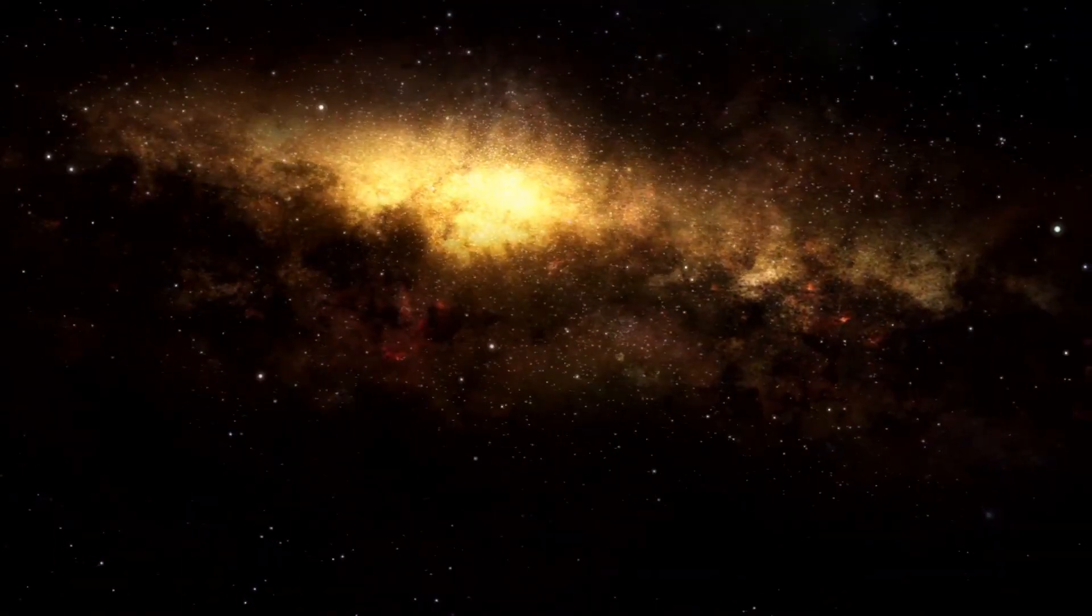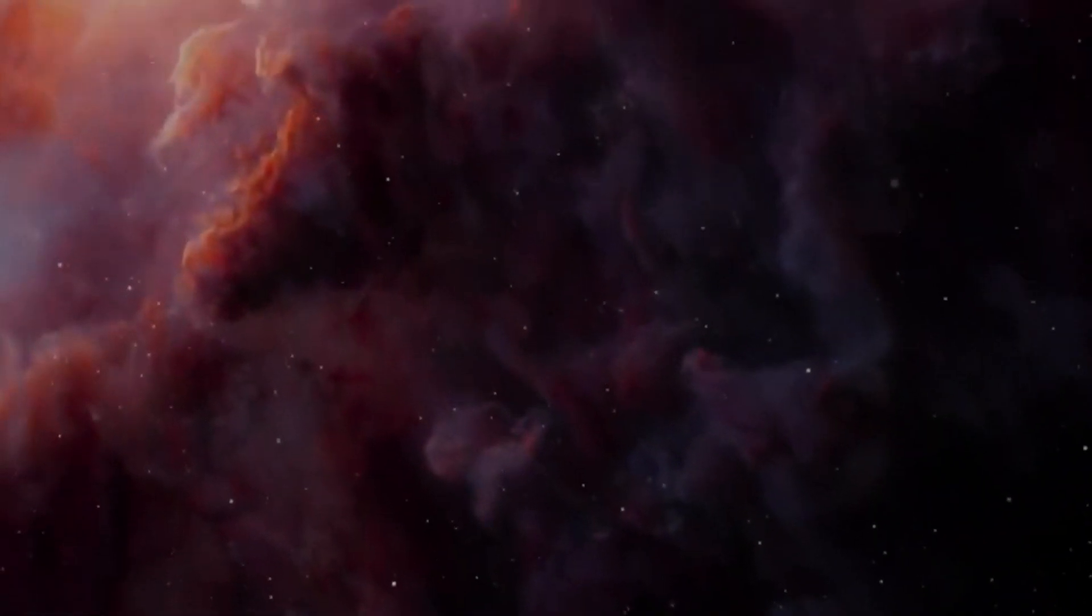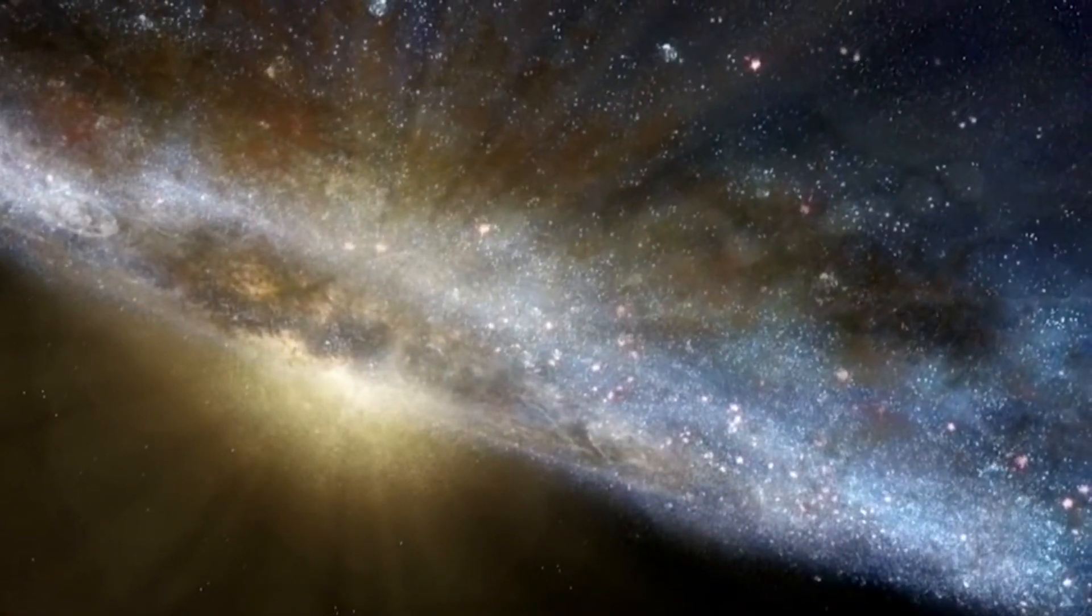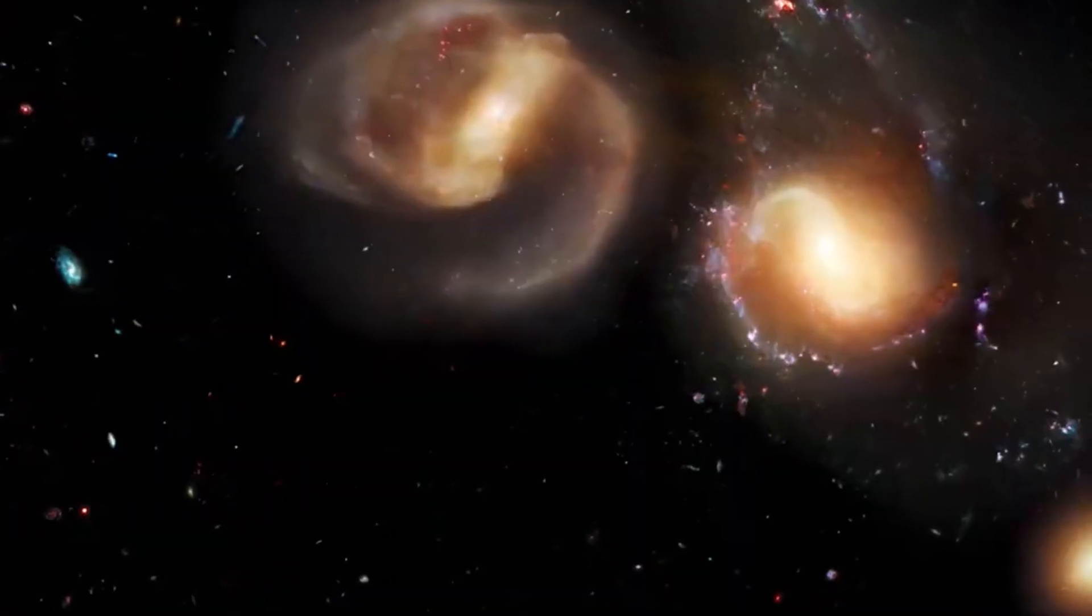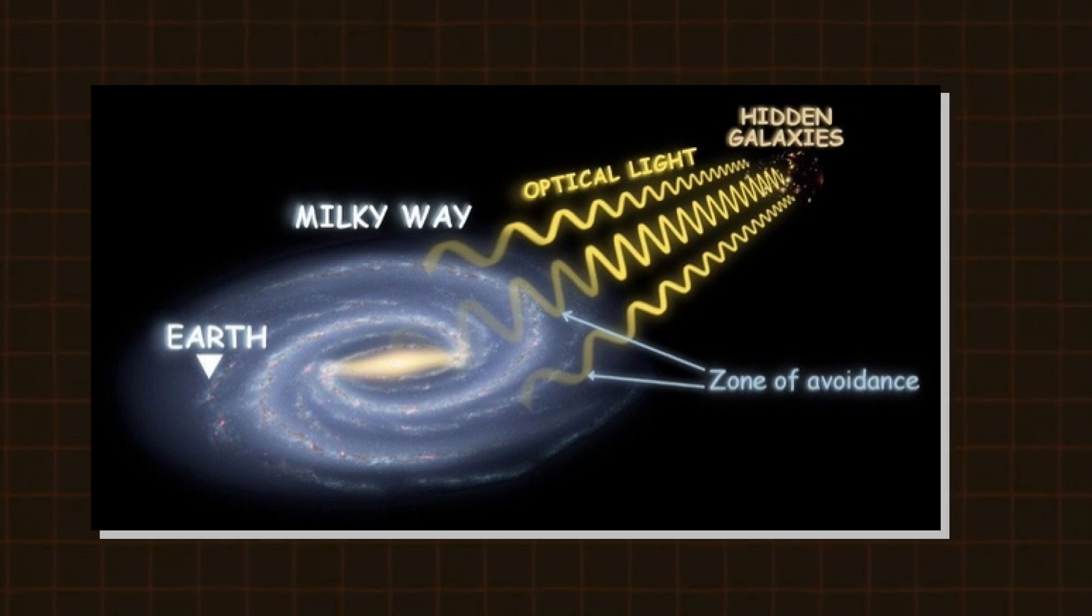Our galaxy is filled with junk that includes stars, gas, and dust. All of this junk blocks the light that arises from the more distant universe. Astronomers are good at mapping most of the large-scale structure of the universe, except for the region where we're forced to look through our galaxy. This region has been termed the Zone of Avoidance.